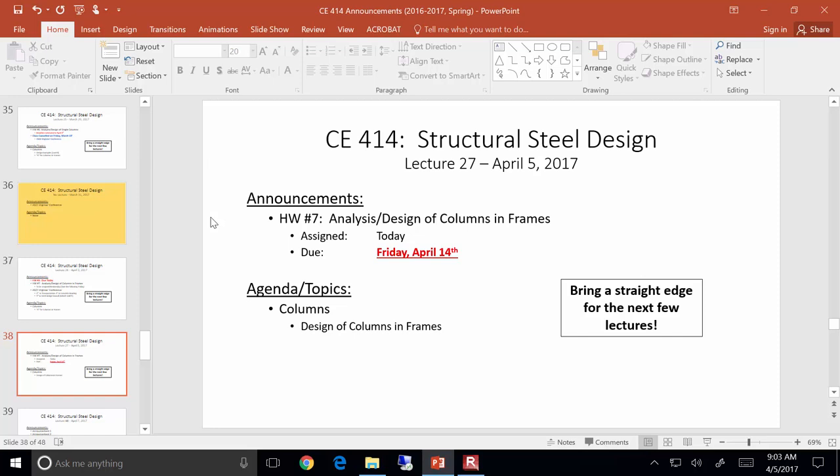This homework is, honestly, it's pretty short. It honestly will be a little repetitive, but I think that's kind of the point. So on problem one, I'm giving you a frame. The idea is just to make sure that you all are comfortable with the use of the alignment chart. So the idea is you go through and just use the alignment chart to compute K. I'm not giving you any loads for the column, so you couldn't compute tau even if you wanted to.